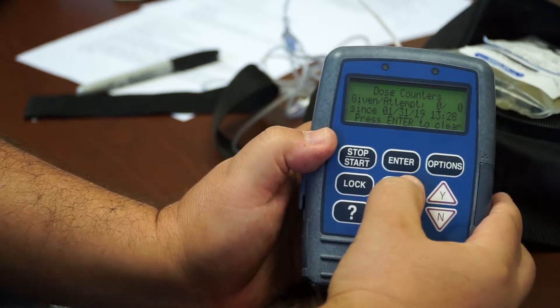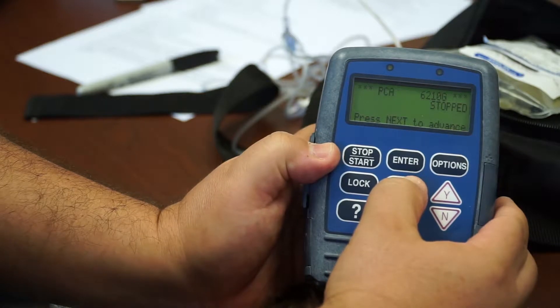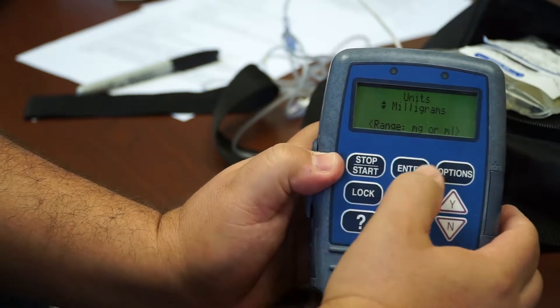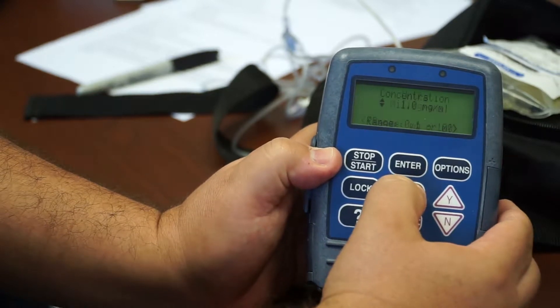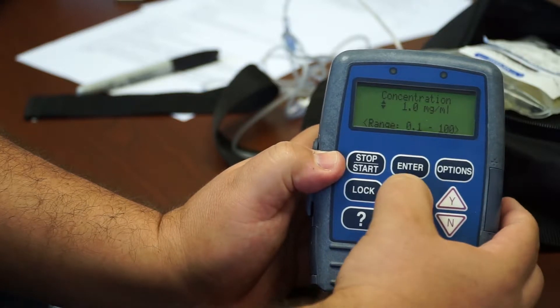And now, at every programmable data setting, it'll actually give you the options to change the lock level at the bottom. So, concentration level, I can press the up and down arrows to change the concentration.